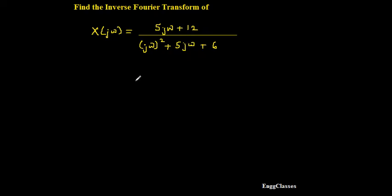This is one of the easiest numericals where I can take the inverse Fourier transform very easily, because it's already in a reduced form. The denominator looks like a second-order quadratic equation — I just have to find the roots, factor them, and take the inverse Fourier transform straight away.